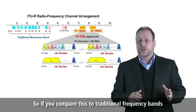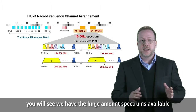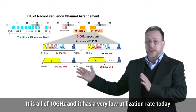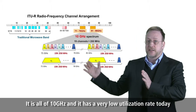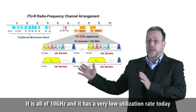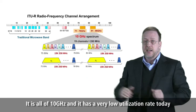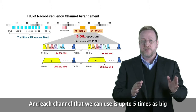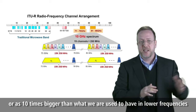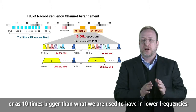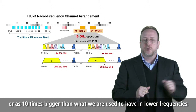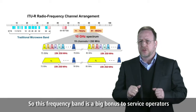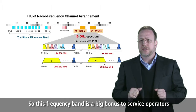If you compare this to traditional frequency bands you will see we have a huge amount of spectrum available — all of 10 GHz — and it has a very low utilization rate today. Each channel that we can use is up to 5 times, or even 10 times, bigger than what we are used to having in lower frequencies. So this frequency band is a big bonus to service operators.